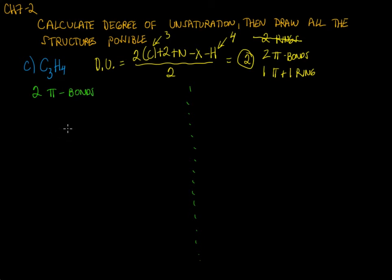We have three carbons here, let's draw them out in a line, and we could have two pi bonds. We could have a pi bond here and a pi bond here. We also could have a triple bond. If you have a carbon-carbon triple bond that counts as two pi bonds. So we could have allene or propyne as two possibilities here.